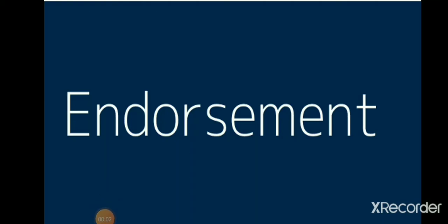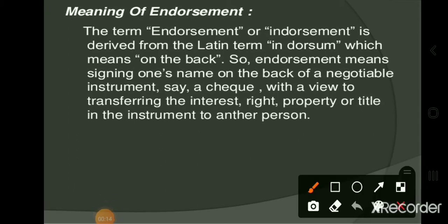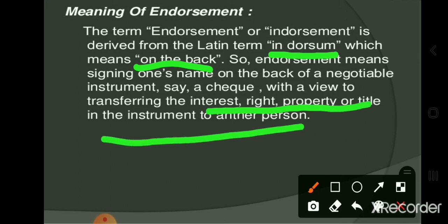Good morning students. In today's video we will discuss endorsement. The term endorsement is derived from the Latin word 'endorsum' which means 'on the back.' So endorsement means signing one's name on the back of a negotiable instrument with a view to transferring the interest, right, property or title in the instrument to another person. However, with the passage of time this narrow meaning has been widened — not only to the back of the instrument but it may be on the face of the instrument also. And if there is no space on either side, a separate sheet can be attached on which the signature is done, which we call an 'allonge.'